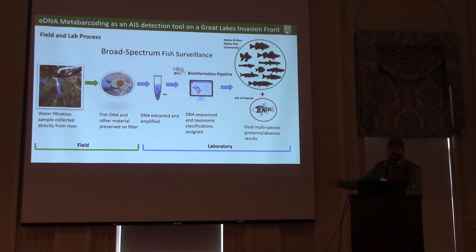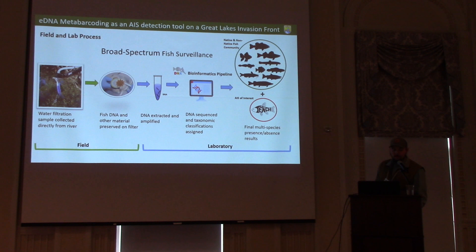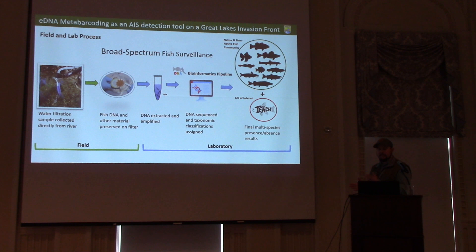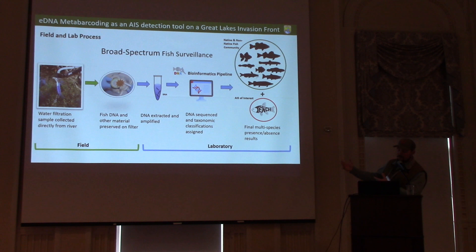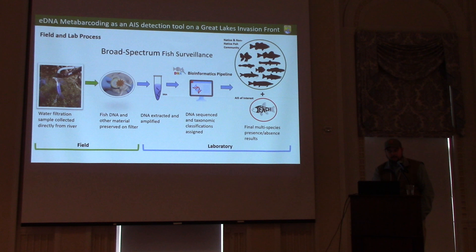Here's an infographic showing the field and lab process for this broad-spectrum fish surveillance application of eDNA barcoding. The field component involves collecting a water filter sample. We have self-desiccating filter packs that are convenient for preserving the sample in the field. Our geneticists at the Northeast Fishery Center extract and amplify the DNA, run it through a bioinformatics pipeline, and assign taxonomic classifications. This is where eDNA metabarcoding diverges from qPCR: qPCR uses a highly specific marker giving a yes or no on a single species, whereas metabarcoding is broad-spectrum with a reference library tailored to the Great Lakes — providing not only a detection of tench but also native and non-native fish community data from the same sample.